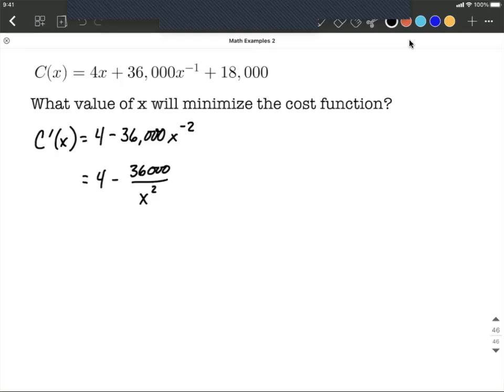Now our critical numbers or critical values will occur whenever either the first derivative is equal to 0, or when it's undefined. From this, we can see this is going to be undefined at x equals 0. If we plugged a 0 in where x is right now, we'd be divided by 0, and that's not allowed. That critical number we don't really care too much about. Because this is a cost function, we want to be thinking about how many items we should be producing, x being that number of items. So we're going to ignore the x equals 0.